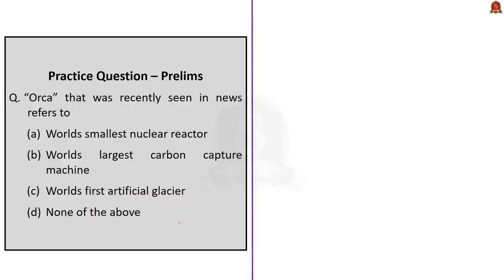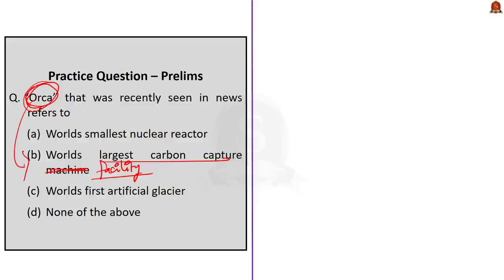Moving to the next question about ORCA — ORCA is nothing but the world's largest carbon capture technology. We saw that it can capture enough carbon that we produce in four seconds in one entire year. Remember ORCA as the world's largest carbon capture machine, and that it is located in Iceland. The next question is about blood pressure. We saw about systolic blood pressure and diastolic blood pressure — systolic blood pressure happens when the heart contracts, whereas diastolic blood pressure happens when the heart relaxes.